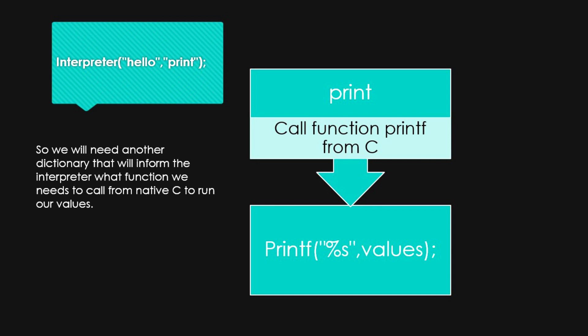For example, 'print' — which I implemented — will call the function printf from C. And after that, printf uses percent-s for the string and percent-s for the values. The values come from the interpreter code.